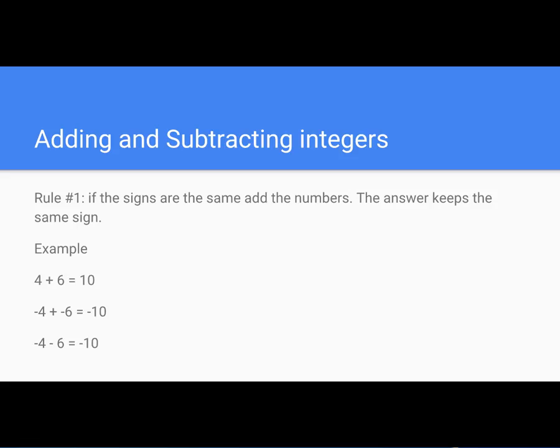Here's some examples. We've been dealing with this our entire life. 4 plus 6 equals 10. The reason this is true is because the 4 is positive, the 6 is positive, so we add both those numbers. The answer is 10 and it keeps the same positive sign.